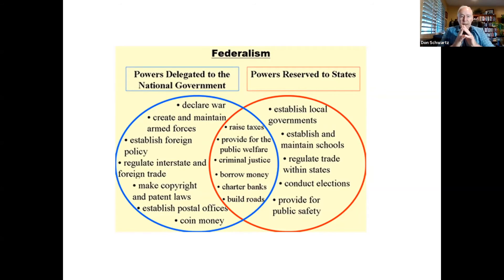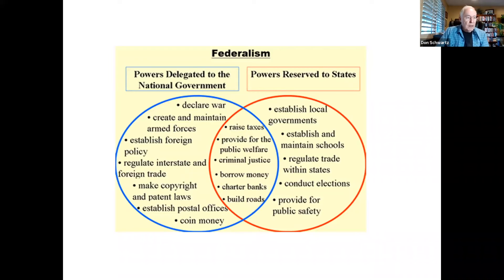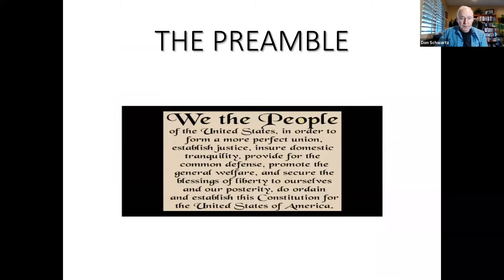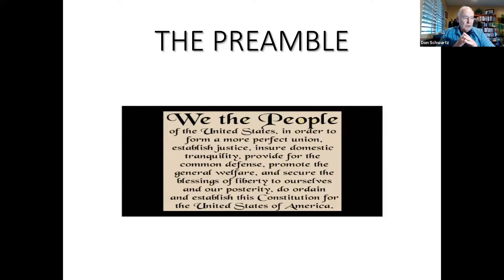This is how the delegates tried to solve the question of how much power to give to a central government and how much to reserve to the states. Now let's look at the preamble to the Constitution. The preamble begins with the familiar words: We the people of the United States in order to form a more perfect union. This preamble does not have the force of law and does not grant any power to federal or state governments, but it states the general purpose of the Constitution.